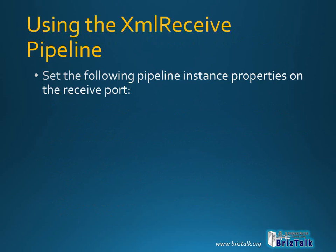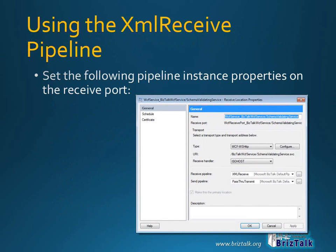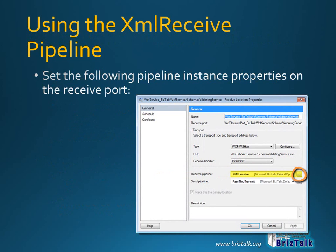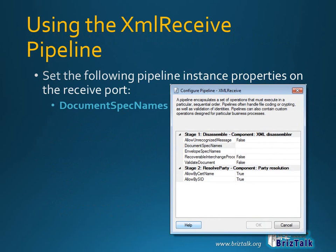Let's look at the first method to get started. Assuming you have the receive location configured to use an XML receive pipeline, you need to go into the instance properties by clicking the ellipsis button next to the pipeline drop-down list, and then change two properties. The first property to set is the document spec names property. By default this will be blank, but to enable schema validation you will need to provide a list of every schema that defines a legitimate message through this location.